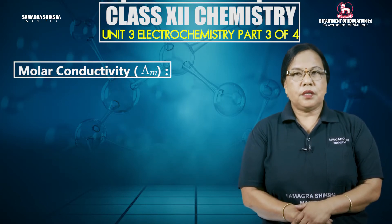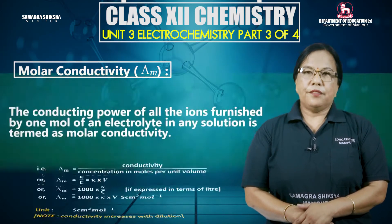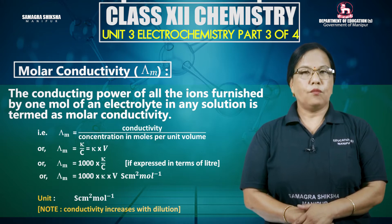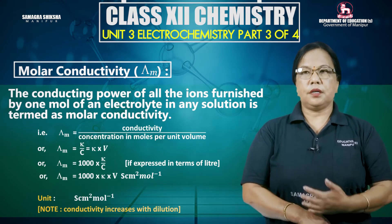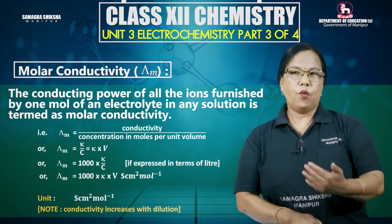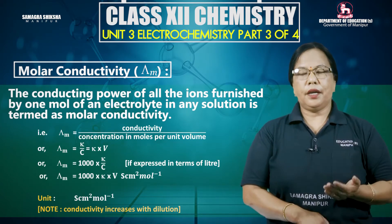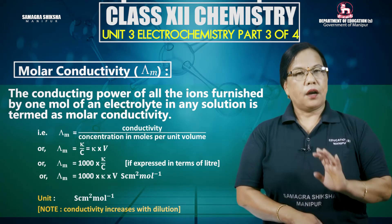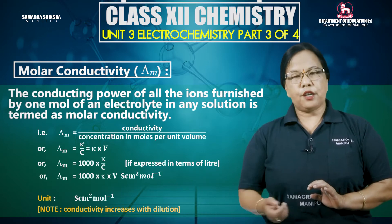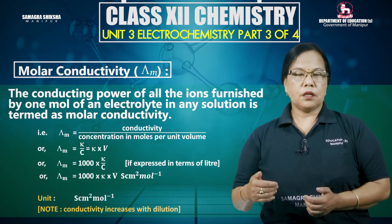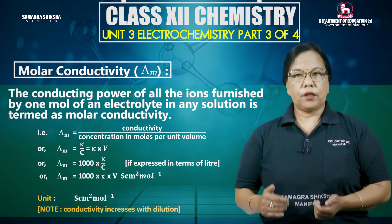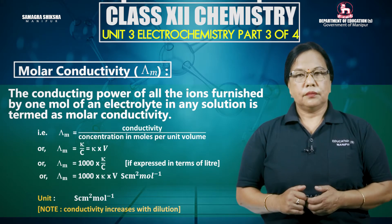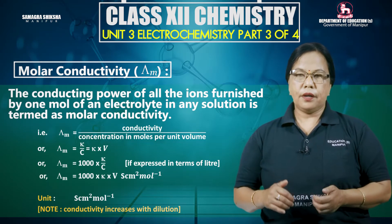Molar conductivity is represented by delta m. By definition, the conducting power of all the ions furnished by 1 mole of an electrolyte in any solution is termed as molar conductivity. Symbolically, delta m equals kappa by c, and if expressed in terms of liters, delta m equals 1000 kappa by c, with units of Siemens centimeter square per mole.